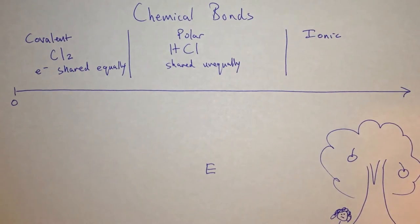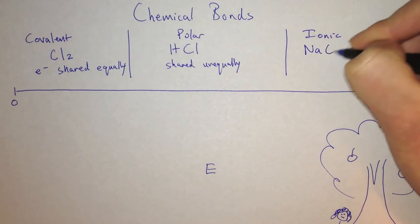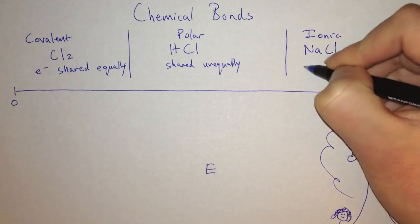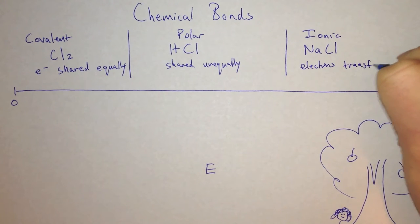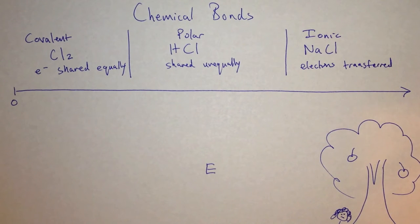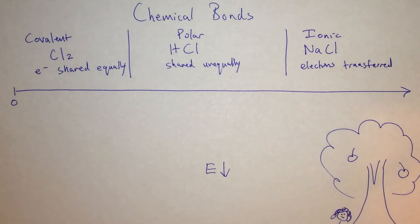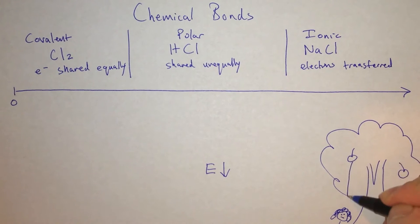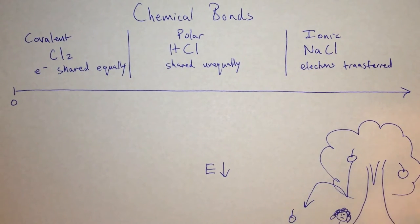And in an ionic bond, we say that the electrons are transferred. This happens because the compounds, when they bond, they try to reduce their energy, just like an apple falls off Newton's head in order to reduce its gravitational potential energy.